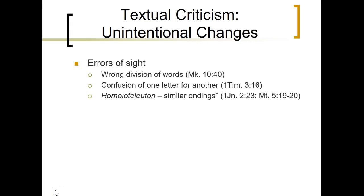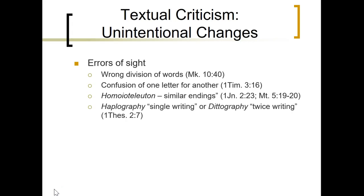What's sometimes called homoeoteleuton is where an error is made because of similar endings on a line. A scribe, while reading, may skip a line because there are similar endings between one line and another. As they look and see the ending, they think they're at one place in the copy and leave out a line or several words because their eye has moved from one line ending to another.